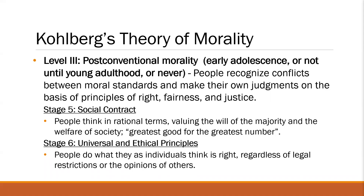Moving on to Stage 6, the last stage — universal and ethical principles. In this stage, we are guided not by the law or by what is pleasing to others, but instead by abstract principles such as rights, fairness, justice, maintenance of human life, and equality. For example, a person may say that even though death penalty is illegal in their country, some criminals should be punished by death penalty because that's their definition of justice.